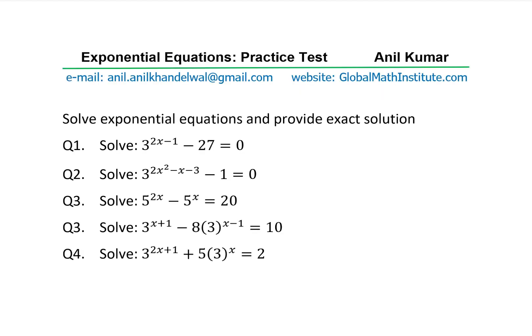To begin with, we have the very first question: 3 to the power of 2x minus 1, minus 27, equals 0. It can be solved very easily by comparing the exponents. The second question is 3 to the power of 2x squared minus x minus 3, minus 1, equals 0.